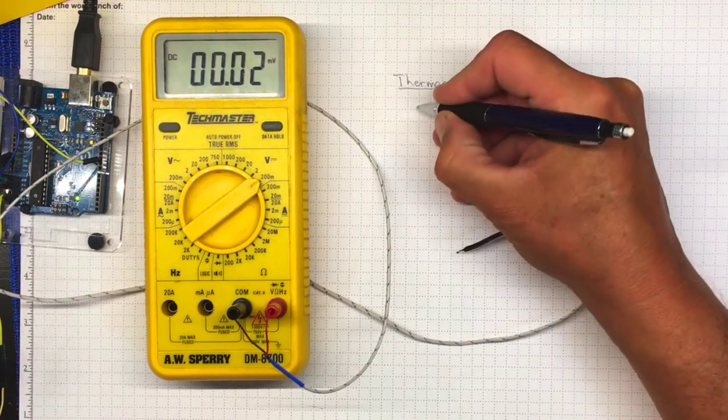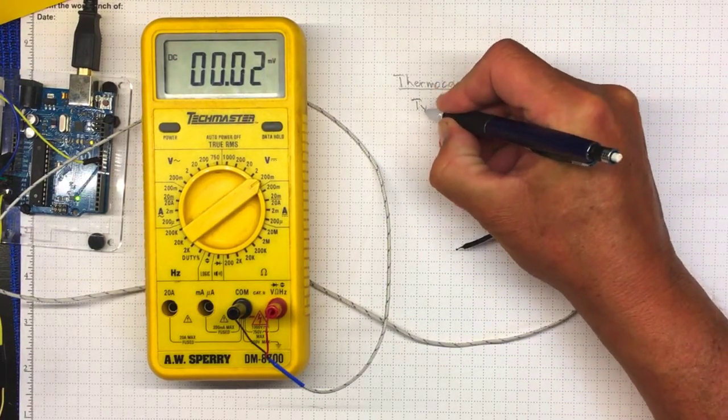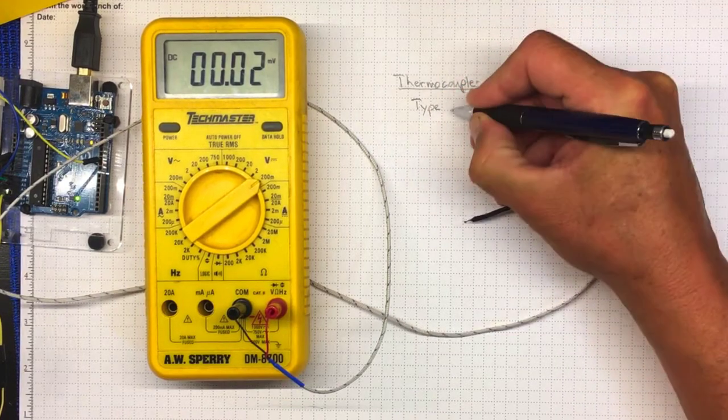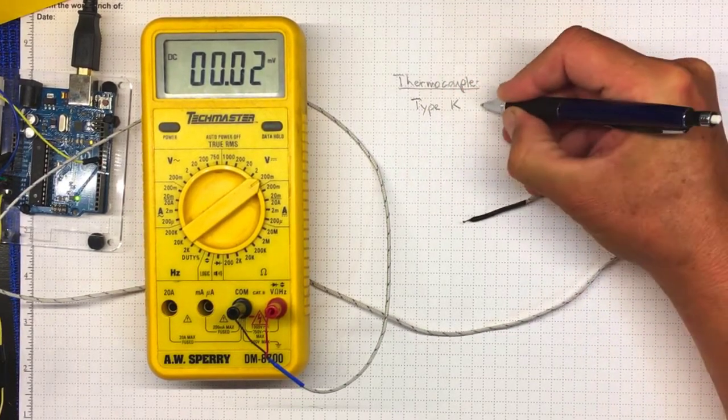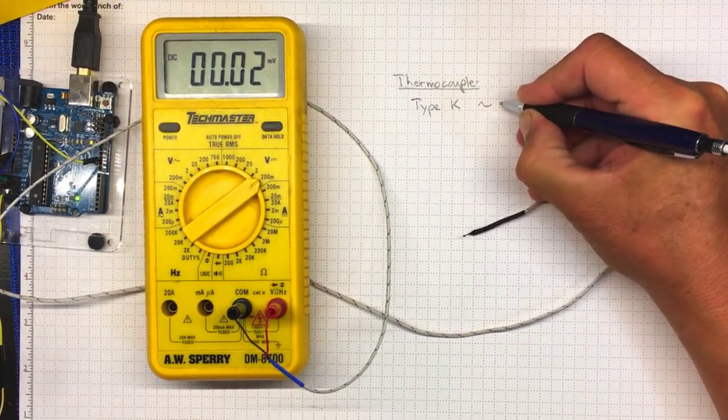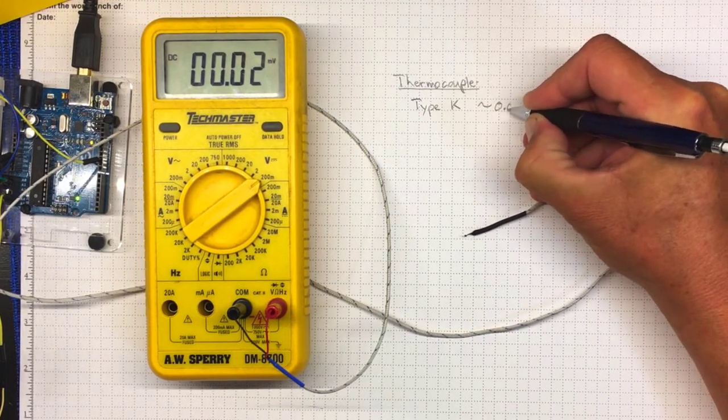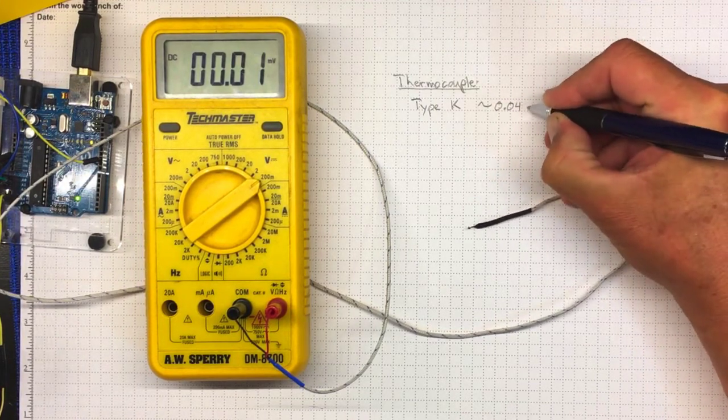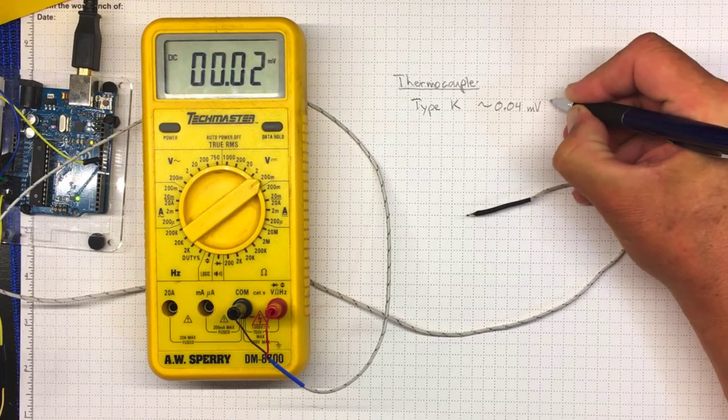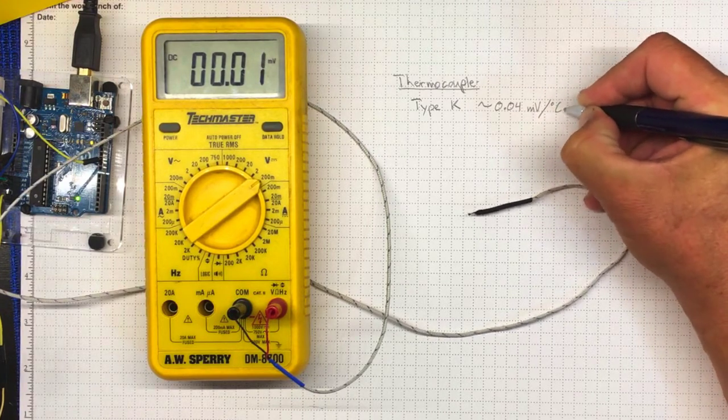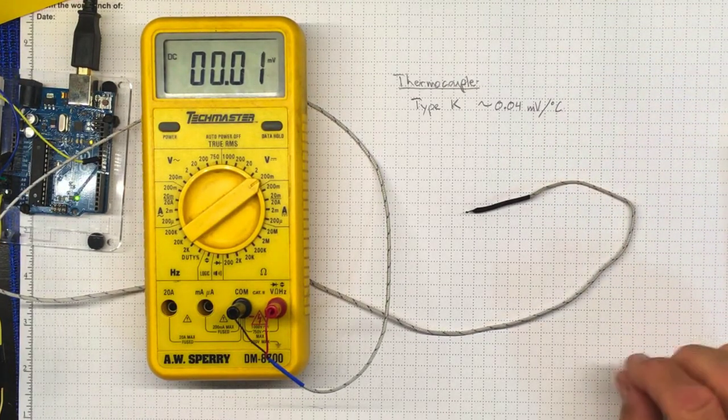Now thermocouples come in different types depending on the kinds of metals and for type K the sensitivity of the thermocouple is about 0.04 millivolts per degree Celsius. So that's a really tiny difference in temperature.